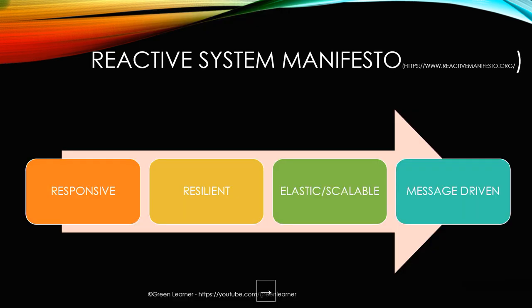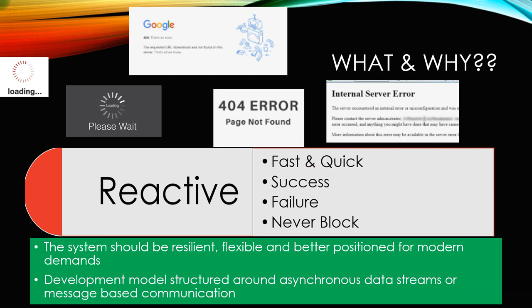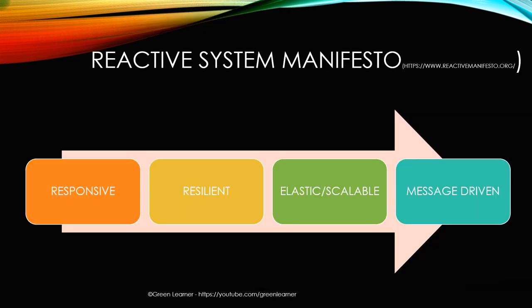The third system prepares the response if it is the final system in the chain and presents it to the user. With this approach, the process is not blocked and the user gets a response as quickly as possible. There is a manifesto — a standard — for what is expected and how we can develop a reactive system. The key terms are: first, responsive; second, resiliency; third, elastic (also called scalable); and last, message-driven. These come under the reactive system manifesto.